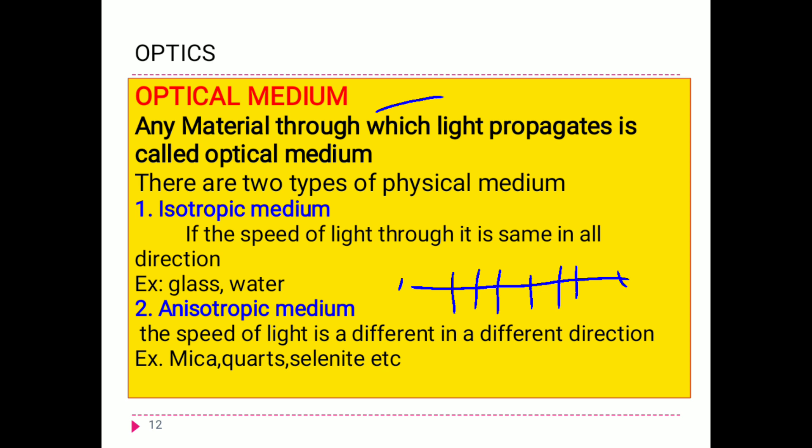In an anisotropic medium, the speed of light is different in different directions — it continuously changes. Those types of materials or media are called anisotropic media. Examples are mica, quartz, and certain crystals.